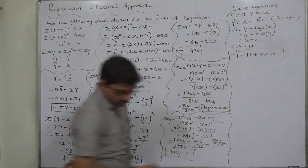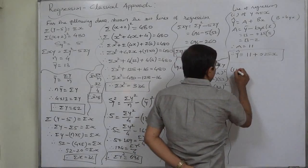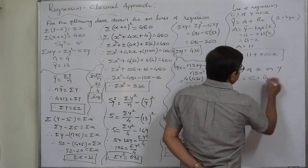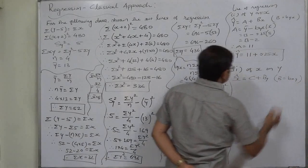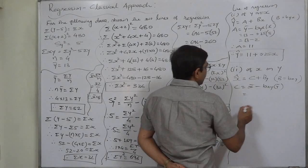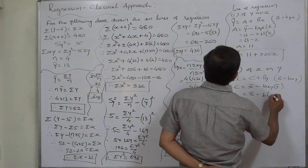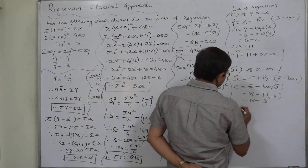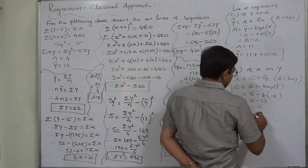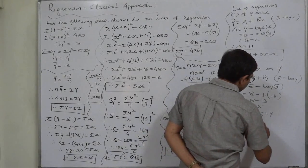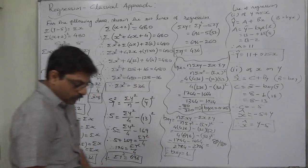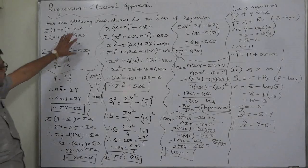The line of regression of x on y has the standard form x̂ = c + b_xy·y. First find c = x̄ − b_xy·ȳ = 8 − 1×13 = 8 − 13 = −5. So the regression line of x on y is: x̂ = y − 5, or equivalently y − 5 is the line of regression of x on y.